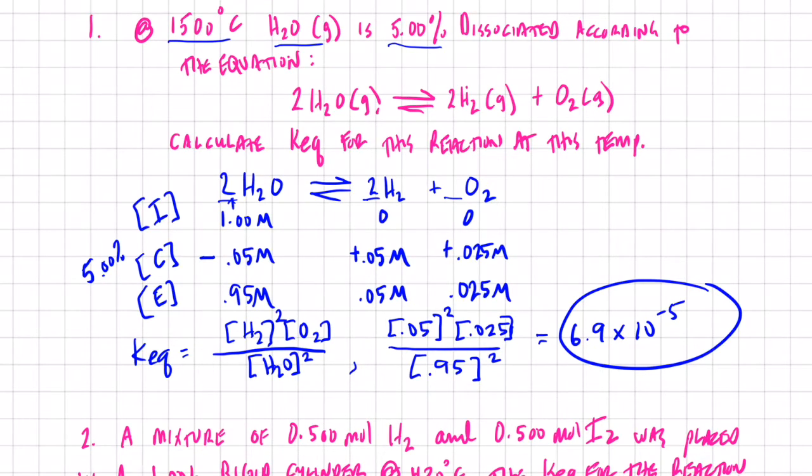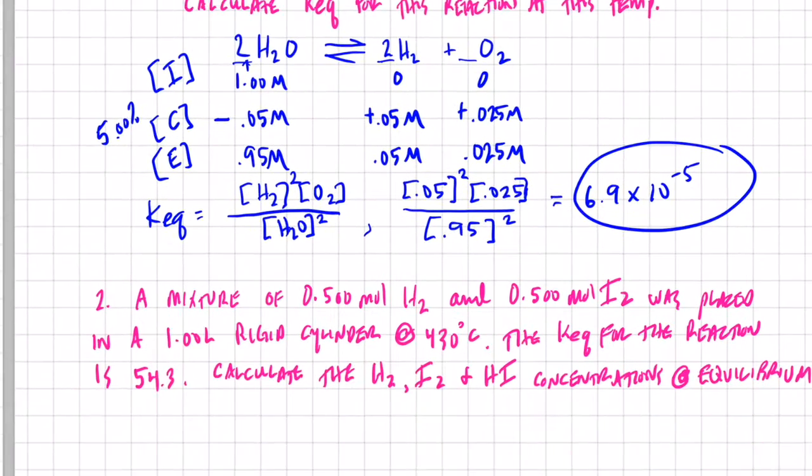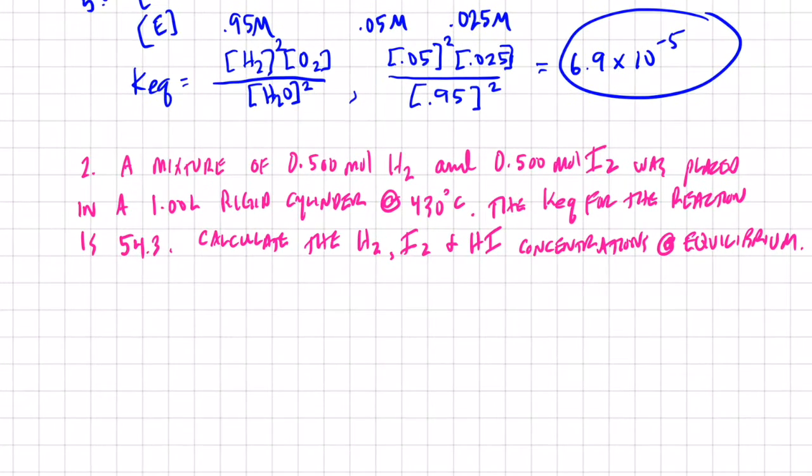Okay, that wasn't too bad, was it? All right, let's take a look at this second example I have here for you. We have a mixture of 0.05 moles of hydrogen and 0.05 moles iodine. We place it in a nice 1 liter rigid cylinder at 430°C. The equilibrium constant for this reaction is 54.3.